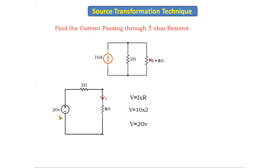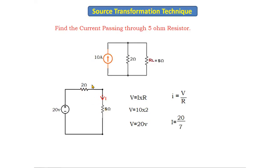After getting 20 volts, we find the current passing through the 5 ohm resistor. The 2 ohm and 5 ohm resistors are connected in series with the voltage source. Using Ohm's law: I = V/R = 20 / (5 + 2) = 20/7 = 2.85 amperes.